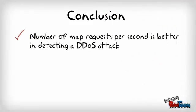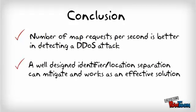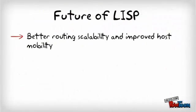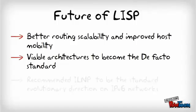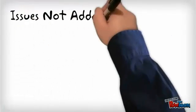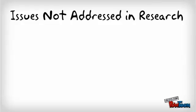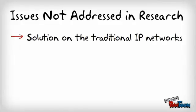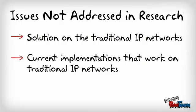In conclusion, the number of map requests per second is better in detecting a DDoS attack. Therefore, a well-designed identifier location separation can mitigate and works as an effective solution. LISP is expected to have better routing scalability and improved host mobility. It is also a viable architecture to become the de facto standard. However, there are also issues not addressed in this article, such as the solution on traditional IP networks and comparison with current implementations that work on traditional IP networks.